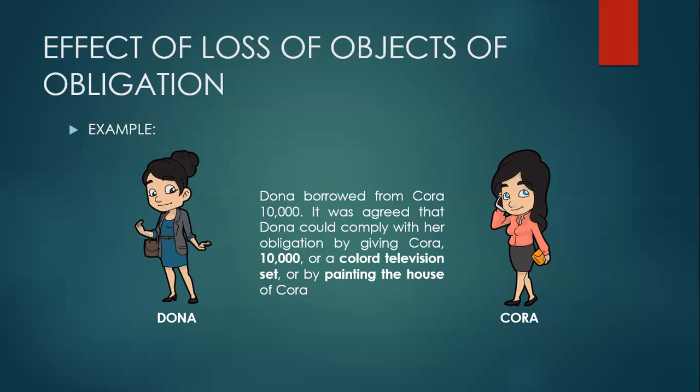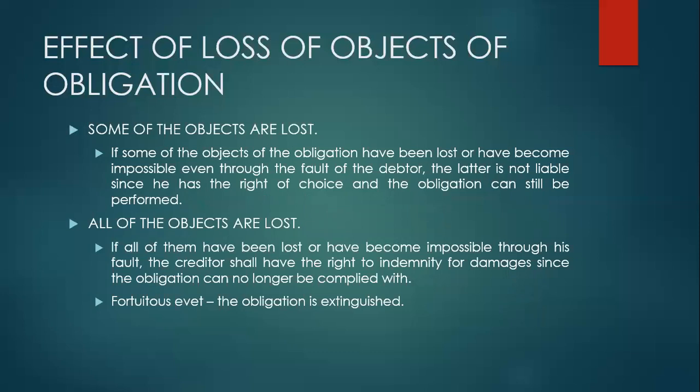Unless of course she gave the right of choice to Cora. What if all of the objects are lost? If all of them have been lost or have become impossible through the fault of the debtor, the creditor shall have the right to indemnity for damages since the obligation can no longer be complied with. Unlike when only some objects are lost, if all objects are lost through the fault of the debtor, then the debtor is liable for damages. What if all of the objects are lost through a fortuitous event? No person shall be held responsible for those events which could not be foreseen or which though foreseen are inevitable, and therefore in these cases the obligation is extinguished.